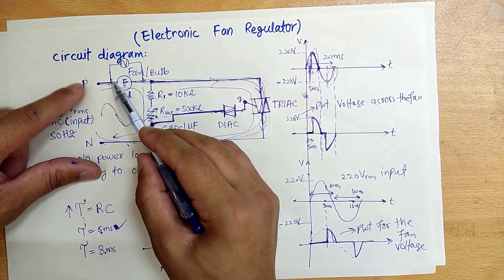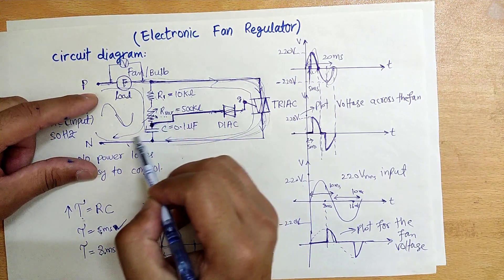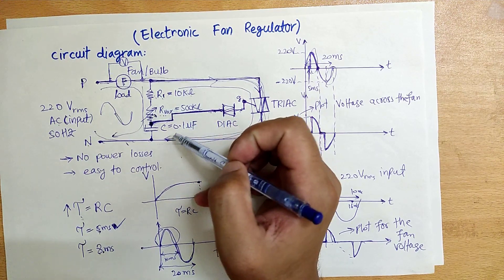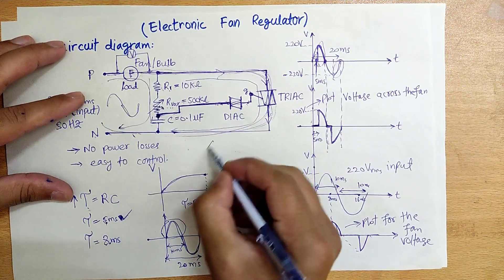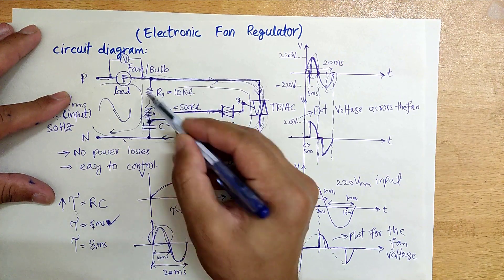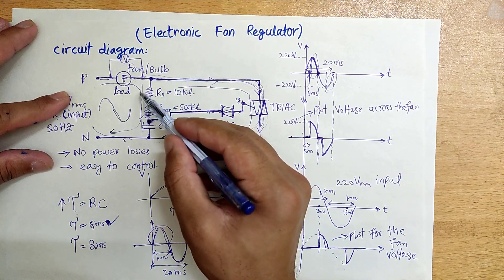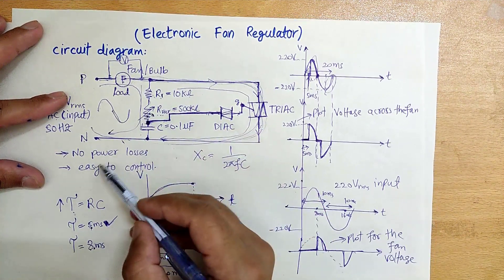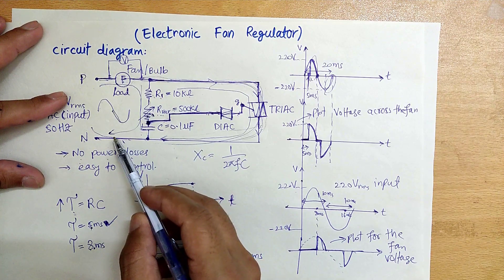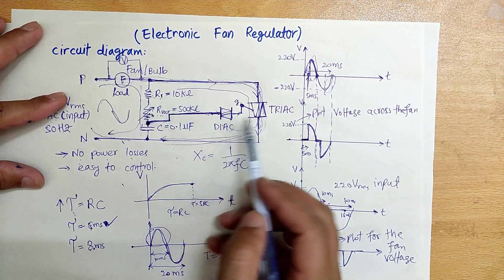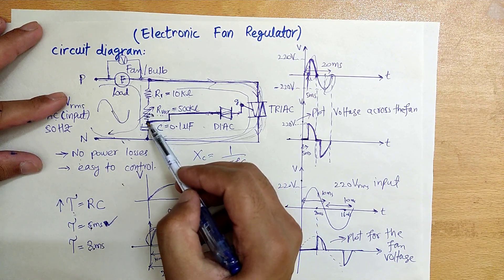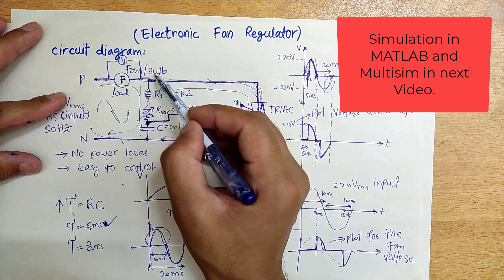In the old resistive circuit, if the fan or bulb is 220 watts, the load current of approximately one ampere flows through the resistors, causing huge power losses. In this electronic circuit, the load current flows through the TRIAC. The resistor and capacitor have very high impedance — the capacitor impedance is X = 1/(2πfC) — so the current through the RC network is in milliamperes, resulting in very low power losses and high efficiency.